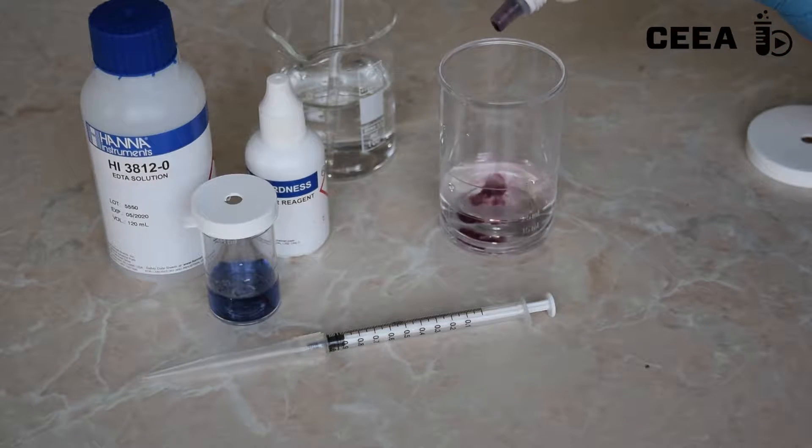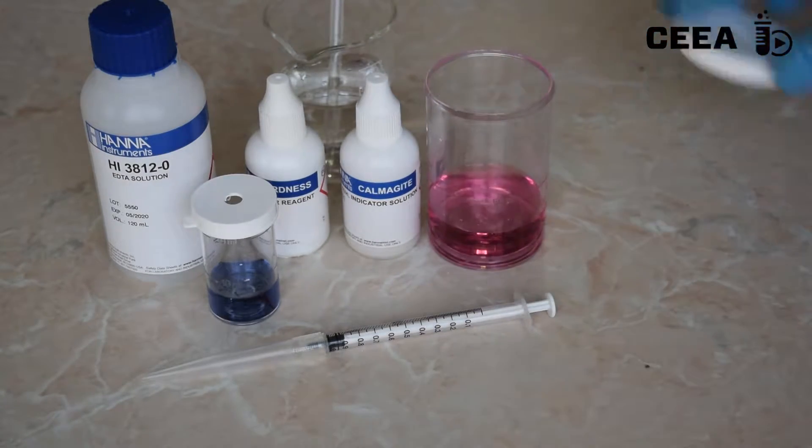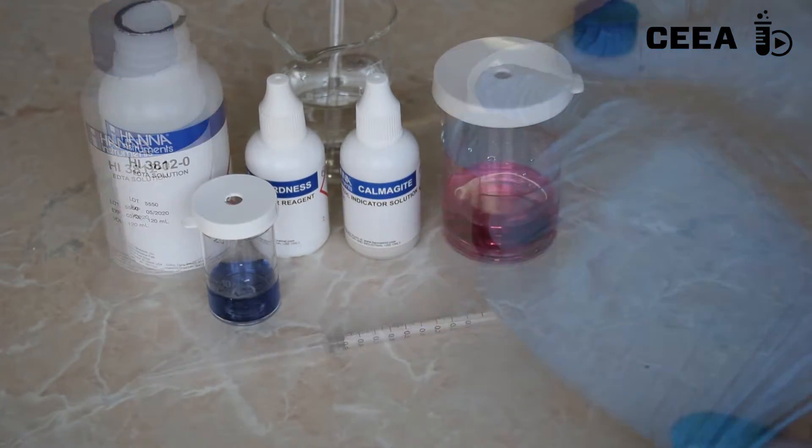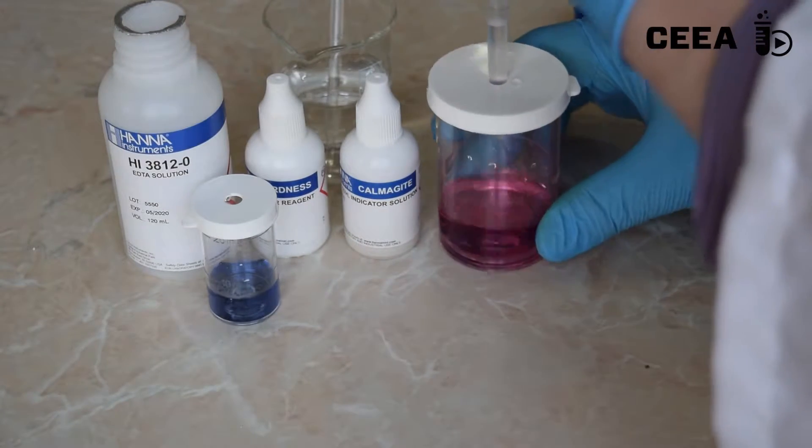The hardness is expressed directly in ppm calcium carbonate by multiplying the volume of the titrant solution with a multiplication factor of 30.